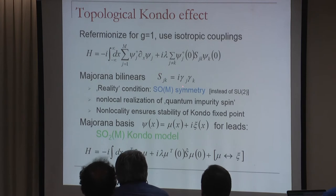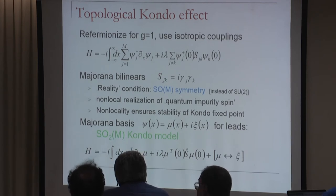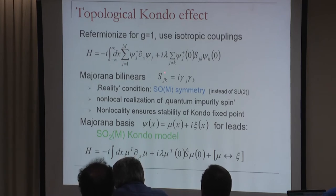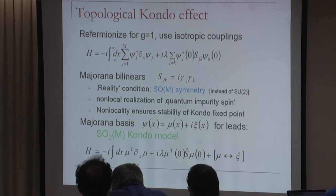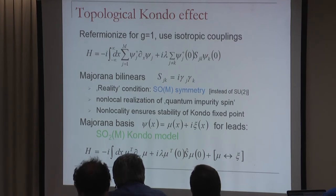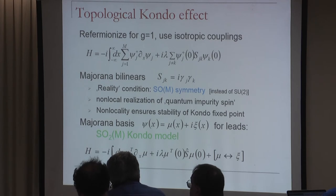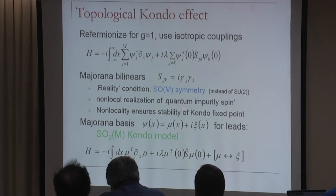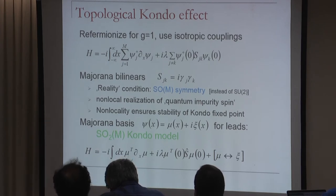The S_JK couples to combinations of different leads: psi_J†(0) psi_K(0), assuming isotropic couplings since the RG flows to isotropy. The gamma_J and gamma_K are at different points in space, so we have a non-local realization of this quantum impurity spin, and this non-locality is linked to stability. One can also write the Dirac fermion as a sum of two Majoranas mu + i xi, each with central charge 1/2, yielding a two-channel SO(M) Kondo model where two Majorana channels in the leads couple to the same impurity.